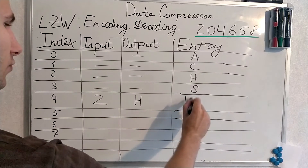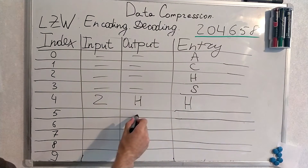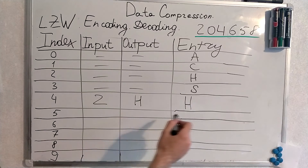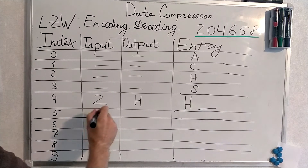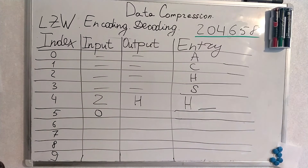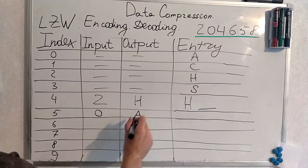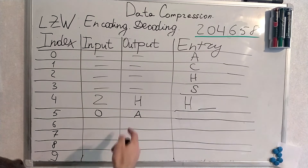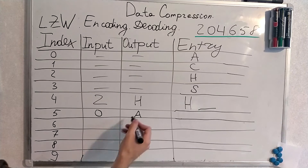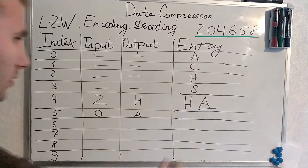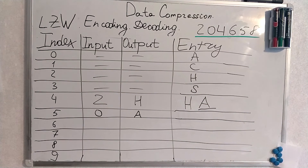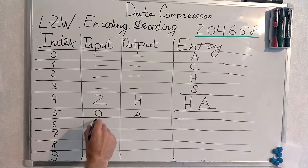A new entry will be generated from H and the first symbol of what we acquire next. Let's give it a place. Next is 0, thus the output is A. This output consists of only one symbol, so it can be thought of as the first symbol. The new entry for index 4 will be HA. What's next? It's 4.